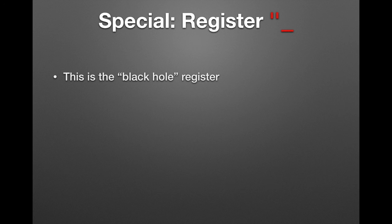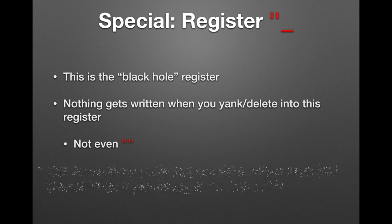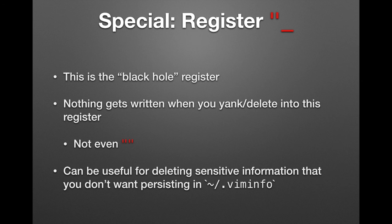One last register that's special enough to stand on its own: the black hole register. This is basically a way to say 'don't do anything with this text.' If you delete text into this register, it doesn't go anywhere — not even into the unnamed register. The reason you might want this is if you have sensitive information: if you delete it normally in VIM, it gets saved into a register which goes into your VIM info file, defeating the purpose. Deleting into the black hole register means once you exit VIM, it won't be saved anywhere.